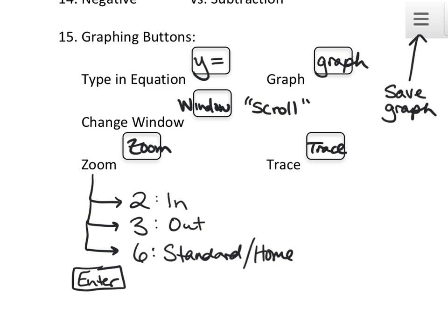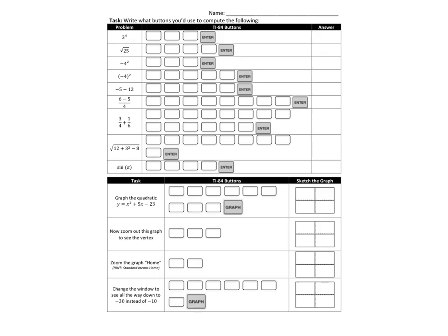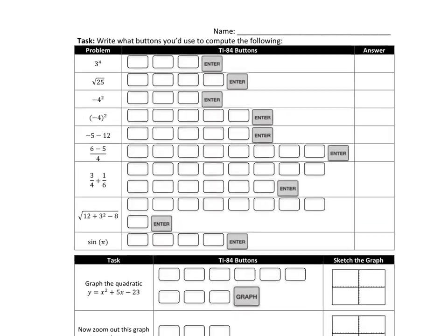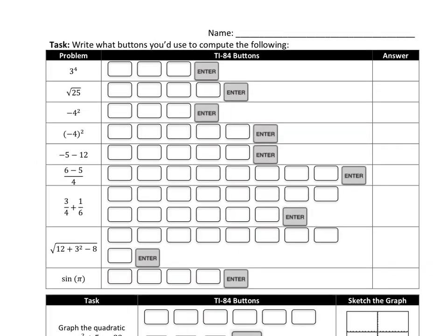All right. That was a whole lot really quickly. And now we just need some time to explore our calculator. So what you're going to do is you're going to do the back of this worksheet. This is where you put your name. You're going to keep this, but I want to come check it off to make sure you're right by the end of class. So I wanted you to keep it because it's kind of like notes and helpful for us, but it is an assignment we need to do. You're going to write down what buttons you'd use to compute the following and then tell me what the calculator says.